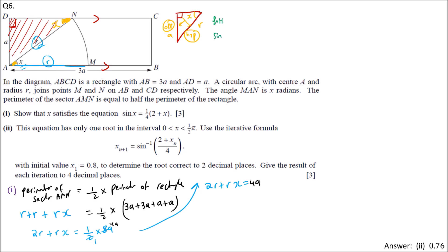If we use SOH, sin X equals opposite over hypotenuse. So sin X equals A over R. We can write A equals R sin X.